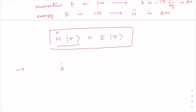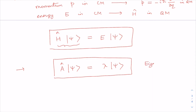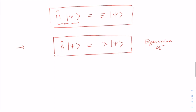Whenever we have an equation of the type Â|ψ⟩ = λ|ψ⟩ for a physically observable quantity A with operator Â, where Â operates on |ψ⟩ and produces a real value λ — because observables must be measurable, so λ must be real — and the state vector remains unaffected, this is called the eigenvalue equation or eigenvalue problem. In the case of the Hamiltonian, λ is the energy. It is a well-known textbook result that for λ to be real, the operator Â must be Hermitian.